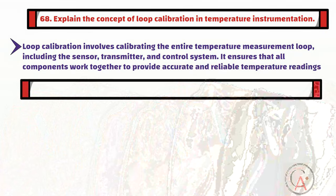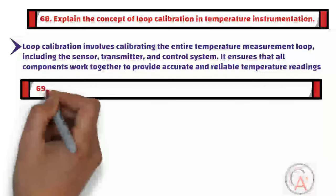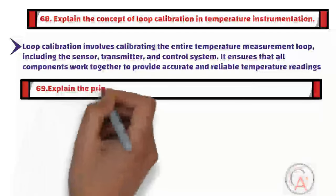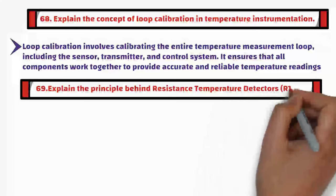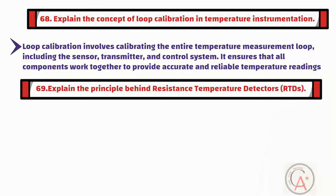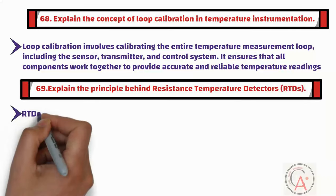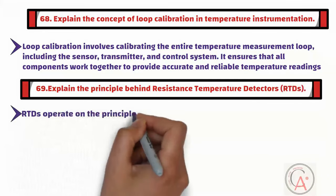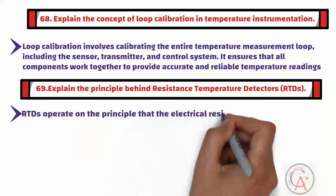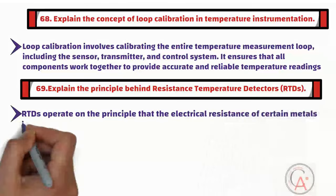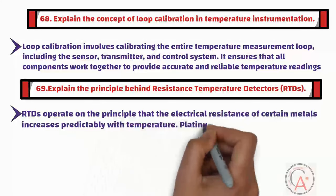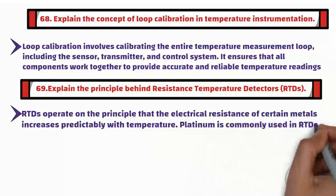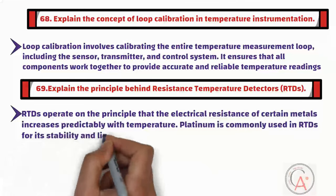Question sixty-nine is: explain the principle behind resistance temperature detectors. RTDs operate on the principle that the electrical resistance of certain metals increases predictably with temperature. Platinum is commonly used in RTDs for its stability and linearity.